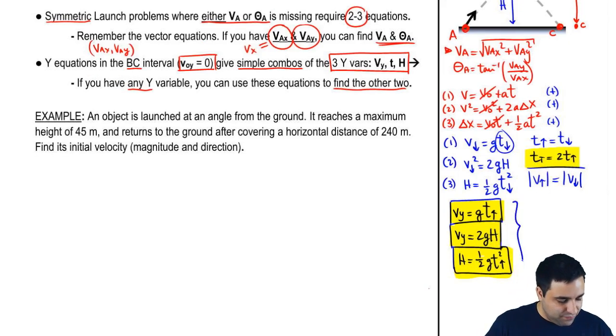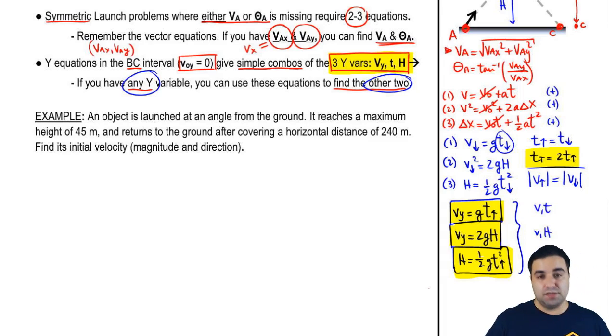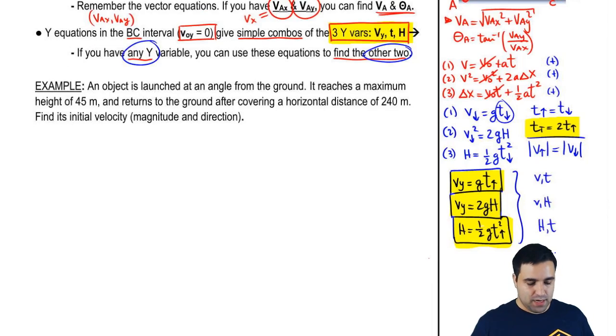So this is a simplified set of three equations that I'm going to be able to use. And with these, as long as I have any Y variable, I'm going to be able to find the other two. If you look here, I have V and T. This has V and H, and this has H and T. So I have every possible combination. Let's do an example. And remember, the strategy is going to be to find VAX and VAY, and then use those to find VA and theta A.